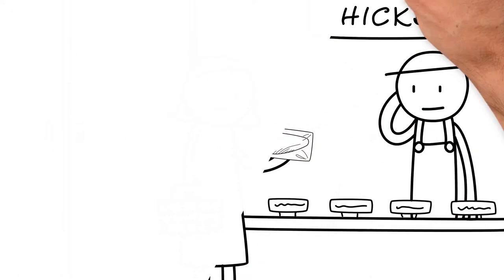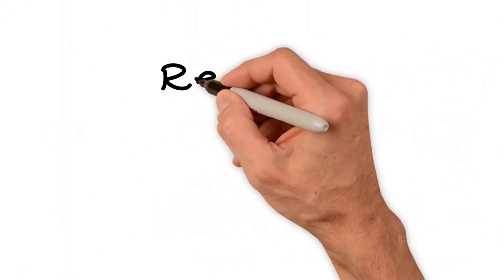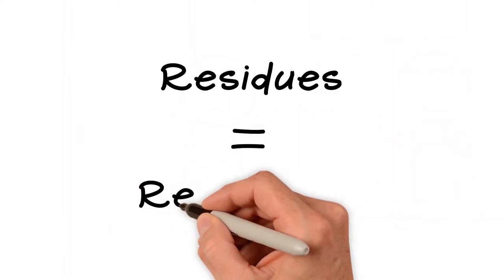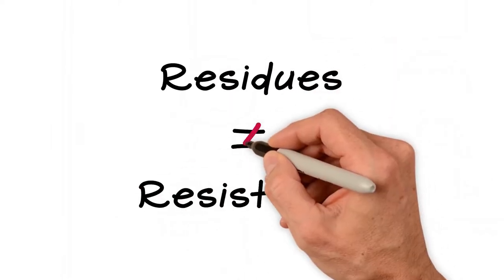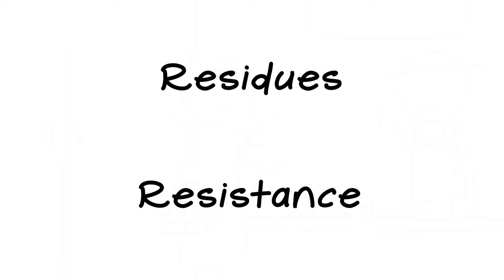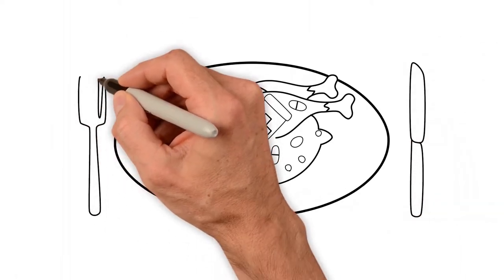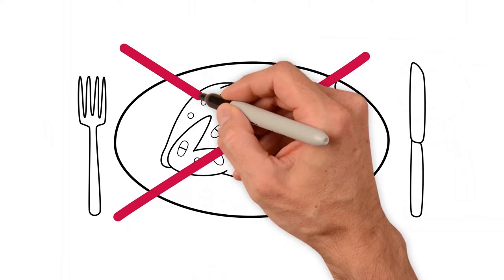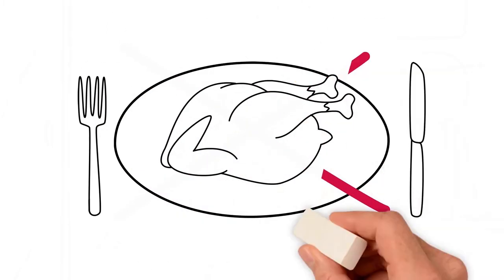We need to get something out of the way first. There's a big difference between residues and resistance. No matter what you hear, remember, when you eat chicken, you're not eating the antibiotics it may have been fed.